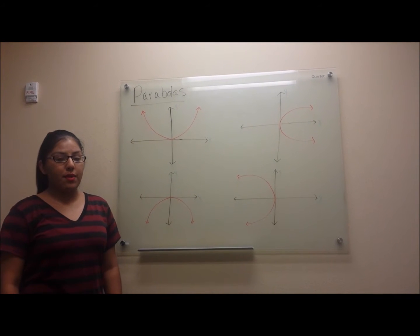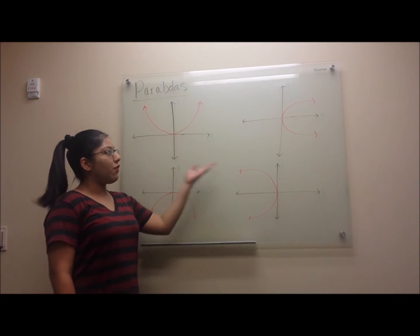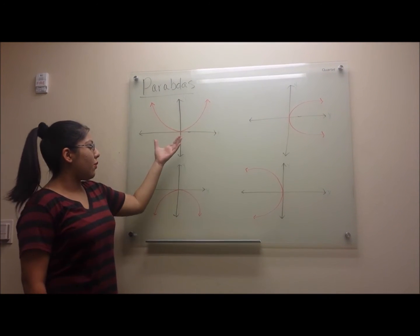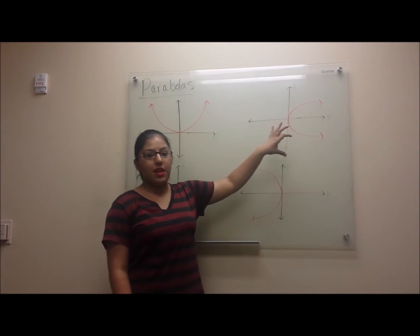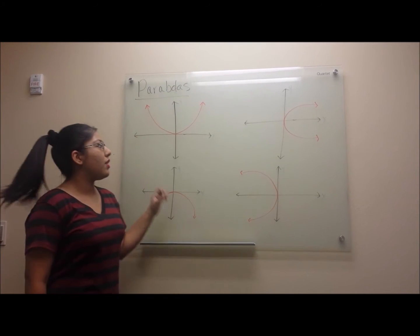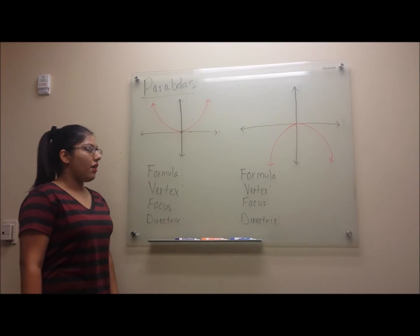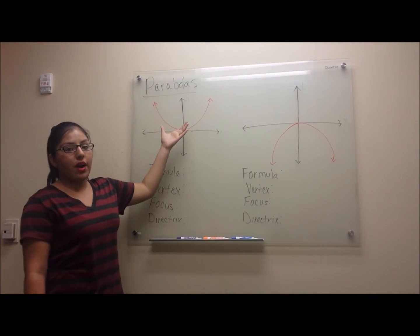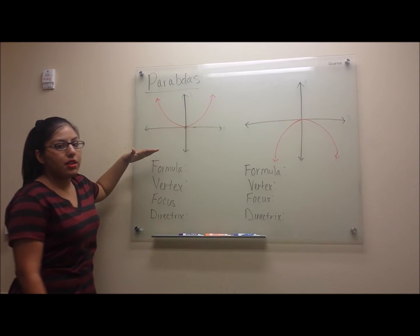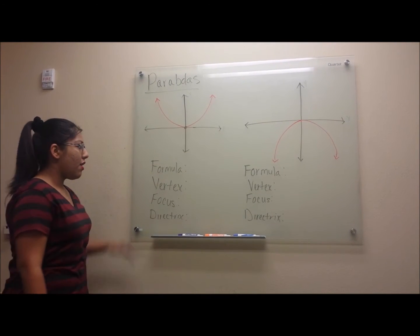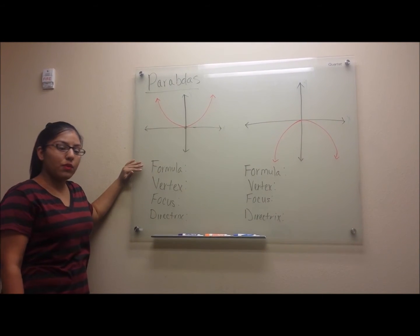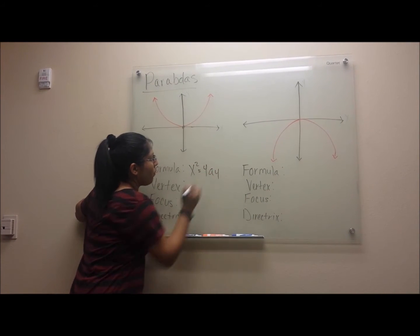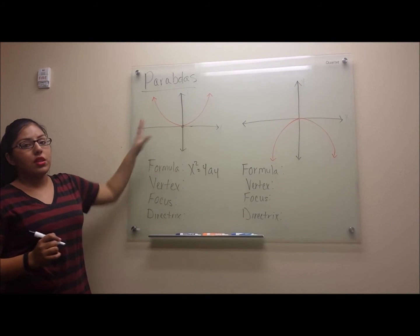Now we're going to be going over parabolas. For parabolas, we have these four types of graphs which are all centered at the origin. We have some that open on the y-axis and some that open on the x-axis. First, we'll be looking at the ones that open on the y-axis. Let's look at our first graph. Our first graph is opening on the y-axis to the positive side. The formula for this is x squared equals 4ay, and this formula will give you this type of graph.